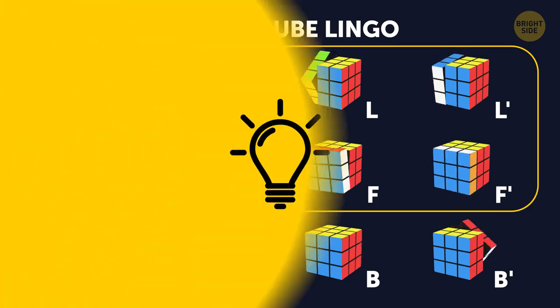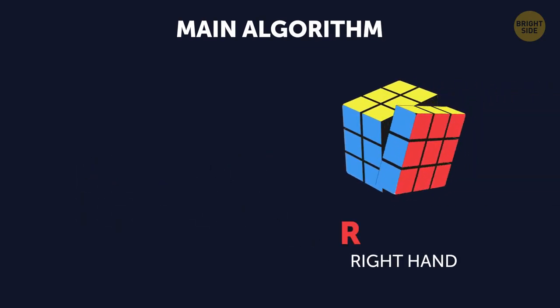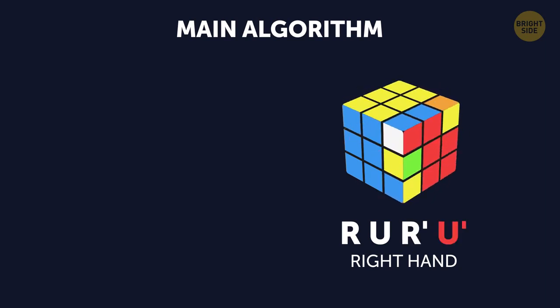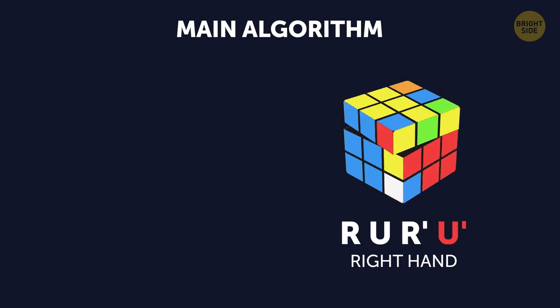So, here's the main algorithm. For your right hand, it'll be R, U, R apostrophe, U apostrophe. And once again, R, U, R apostrophe, U apostrophe.